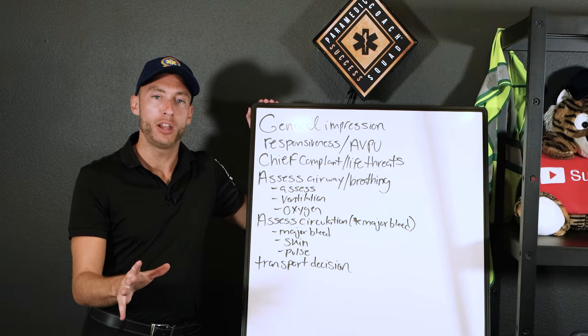Don't forget vital signs. The main vitals we look at: pulse, blood pressure, respiratory rate — quality and rate of respirations. Also include pulse oximetry, skin assessment, blood glucose, and end-tidal CO2. Gather all of that.